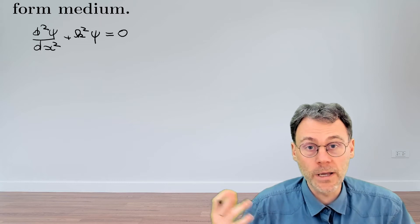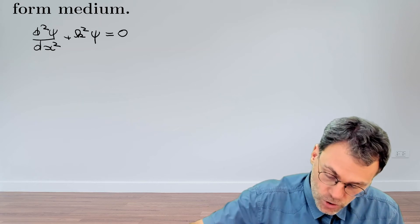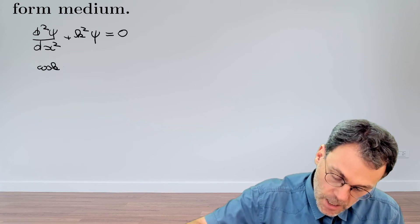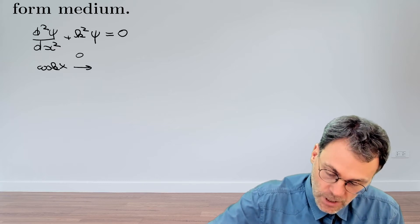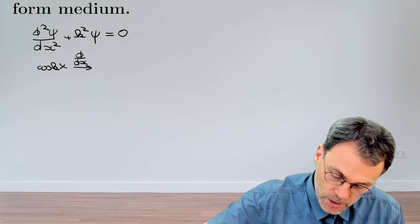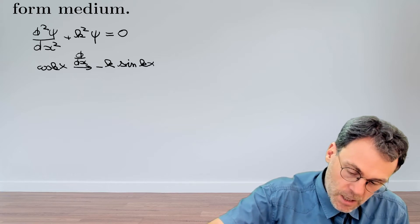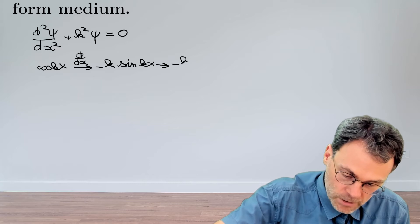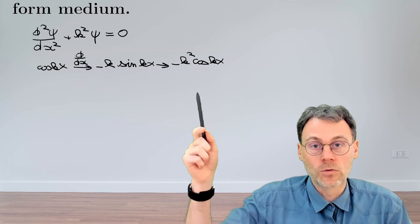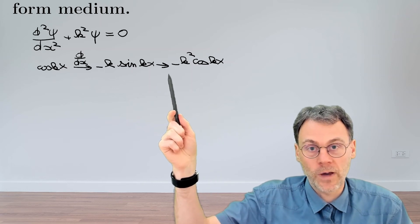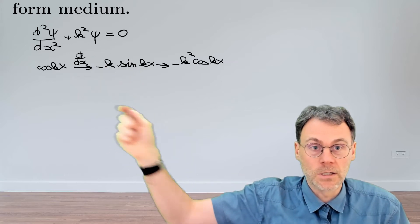That's a very basic differential equation, and you know since kindergarten that one solution is cosine kx, which you can easily verify: if you take the derivative with respect to x this becomes minus k sine of kx. And if you do that again you have minus k squared cosine of kx. So you get back to cosine and pick up an extra factor of minus k squared, which cancels with the second term. So this is indeed a solution.